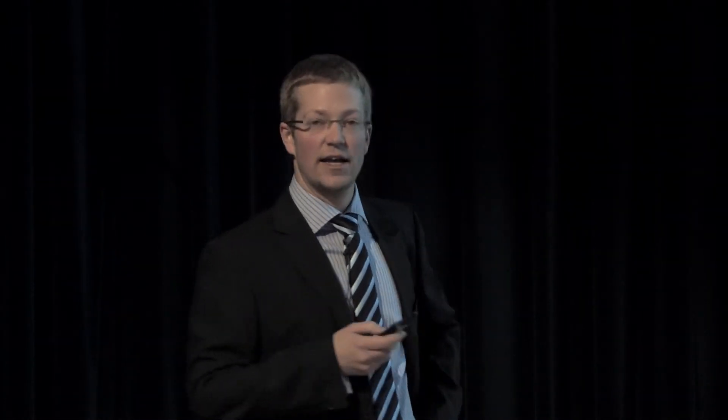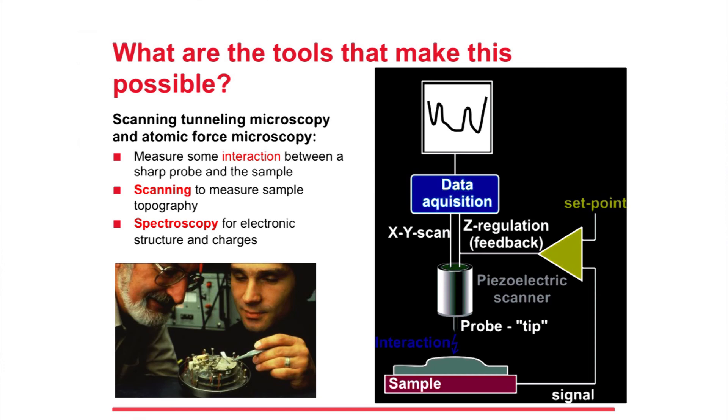The technique or the family of techniques to do this kind of experiments is called the scanning probe microscopes. There are two prominent members of this family: the scanning tunneling microscope and the atomic force microscope. They were invented by Gerhard Binnig and Heinrich Rohrer in the 80s in the IBM Zurich Research Lab and they got the Nobel Prize in physics for this in 1986.